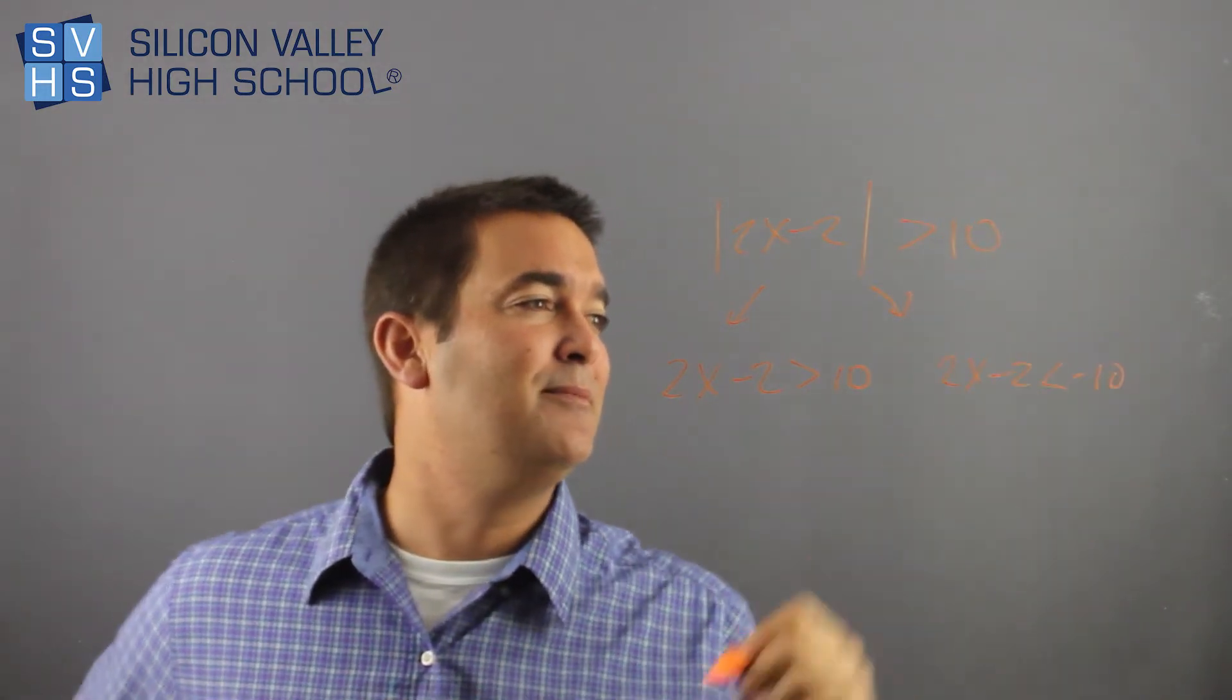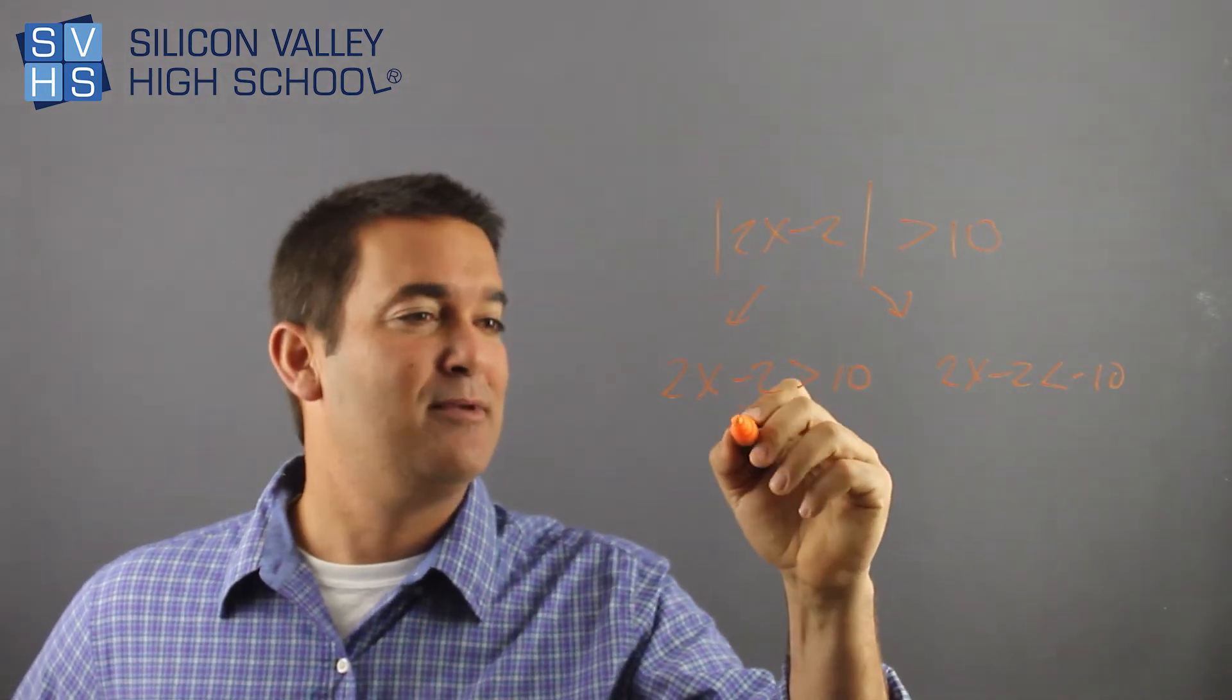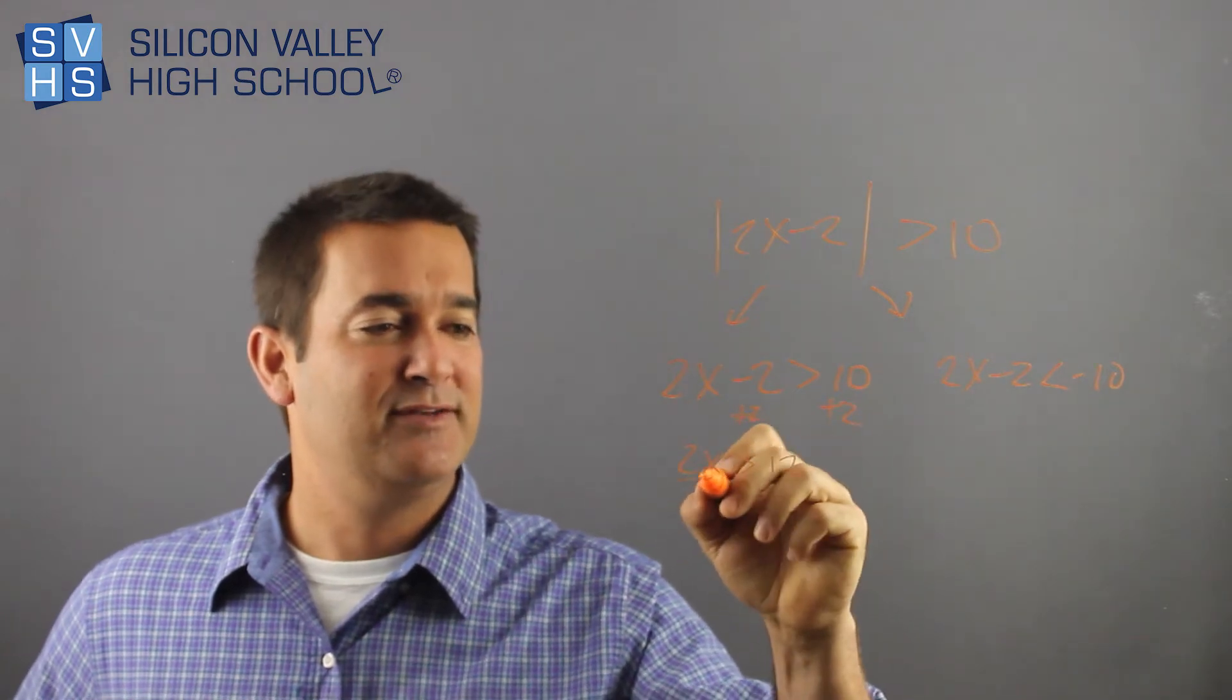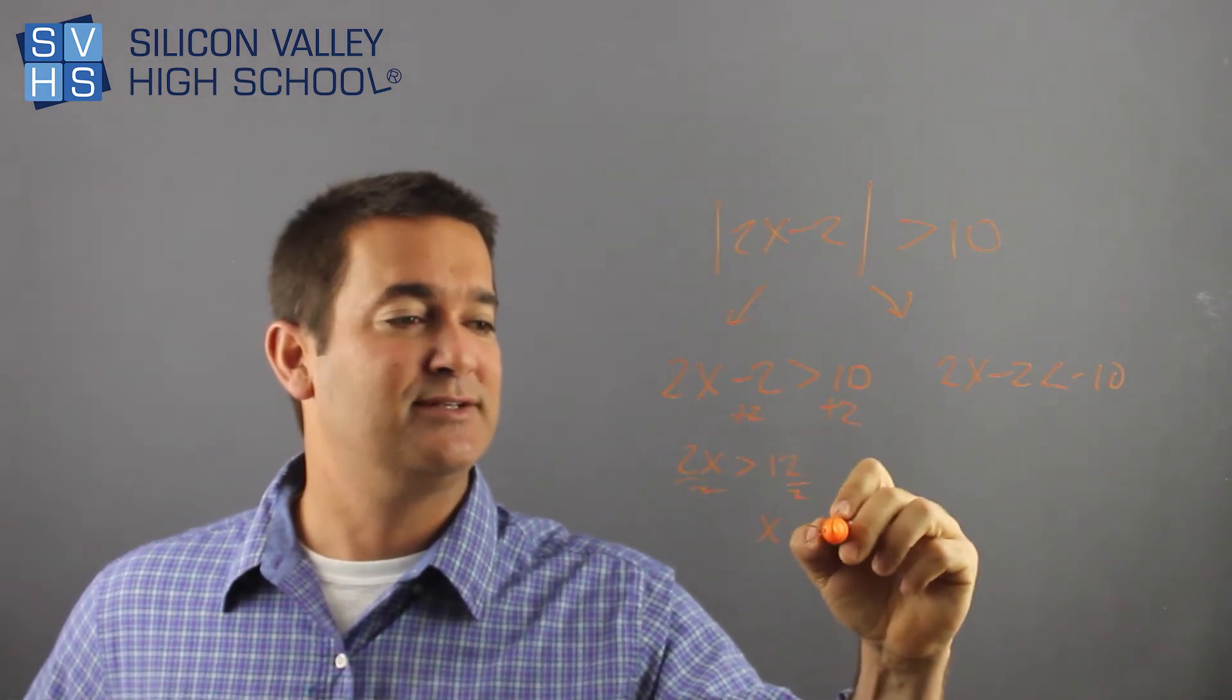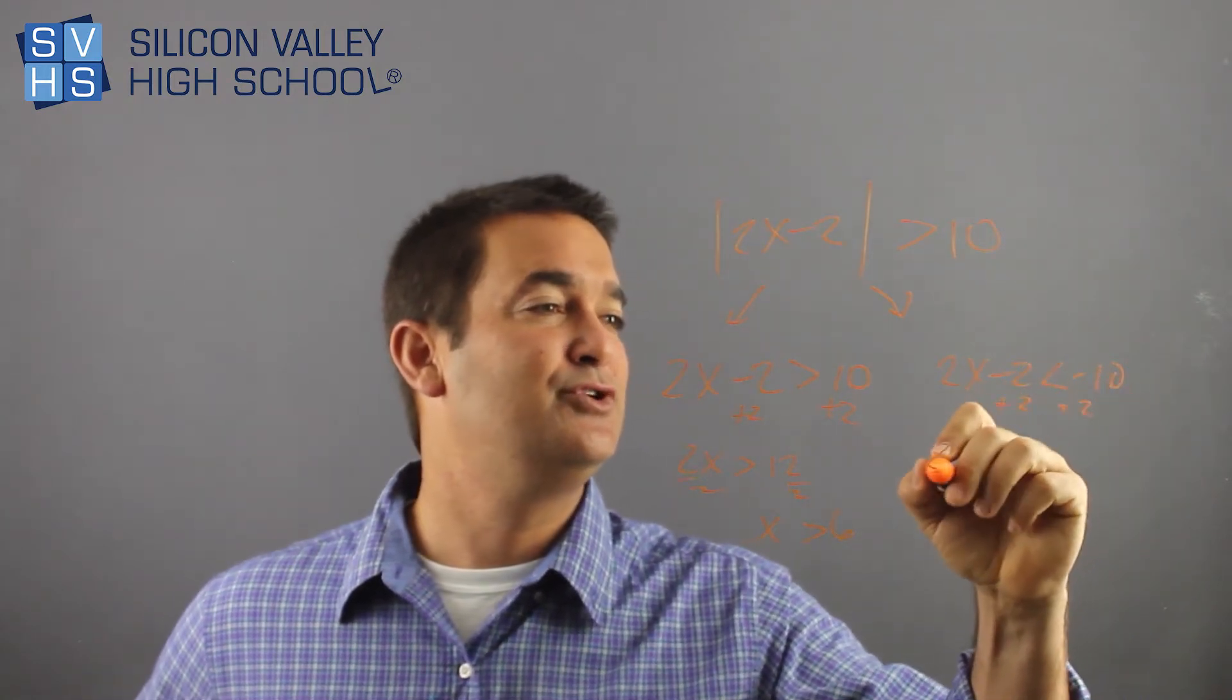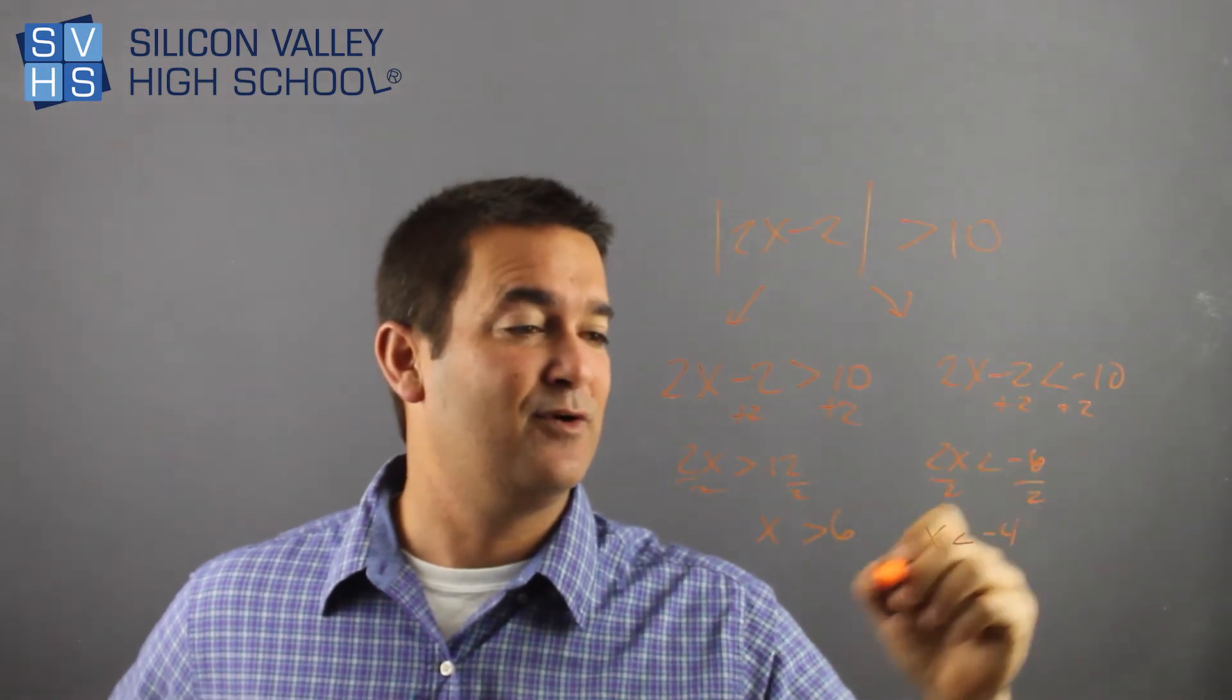Now you have this problem. And from here, it's just about solving inequalities. How good are you? Okay, I'm going to get 2 to the other side. 2x is greater than 12. Divide by 2, divide by 2. X is greater than 6. That's cool. This one, plus 2, plus 2. 2x is less than negative 8. Divide by 2, divide by 2. X is less than negative 4.